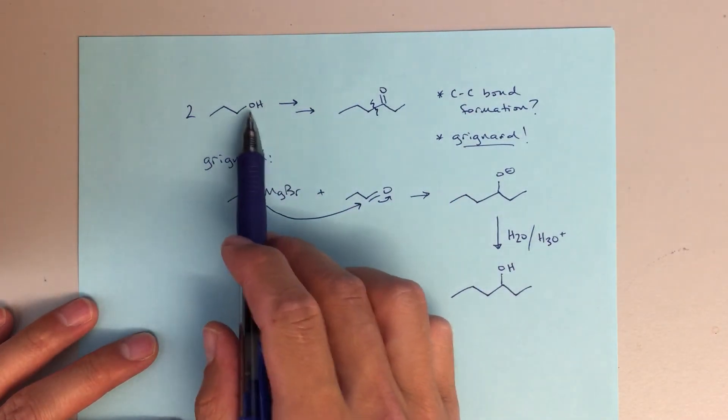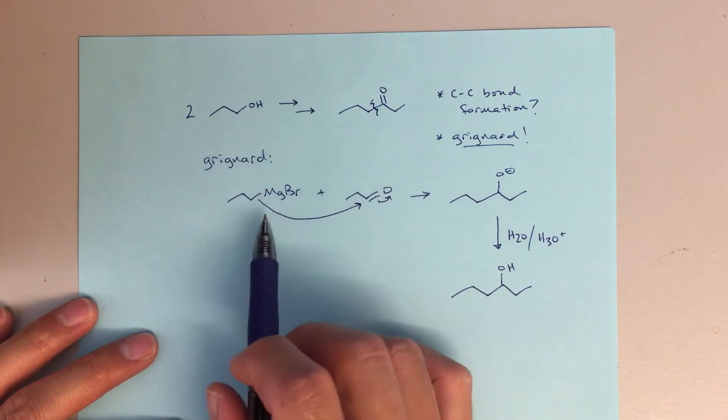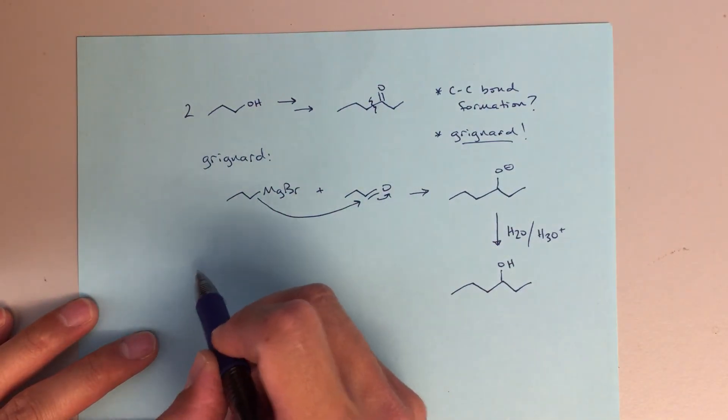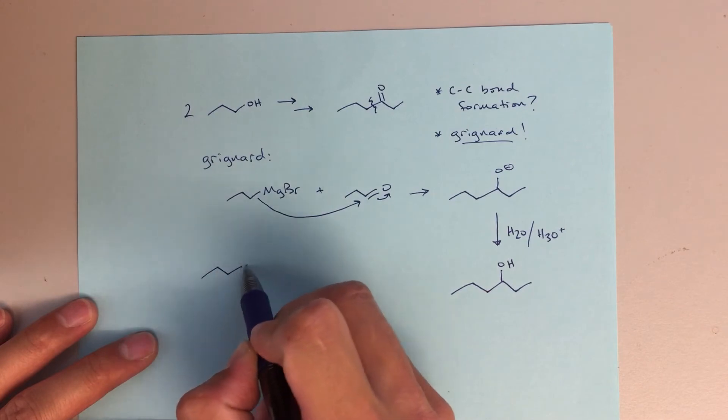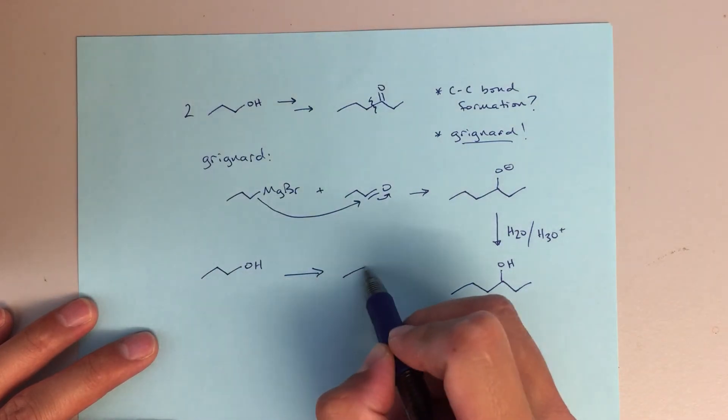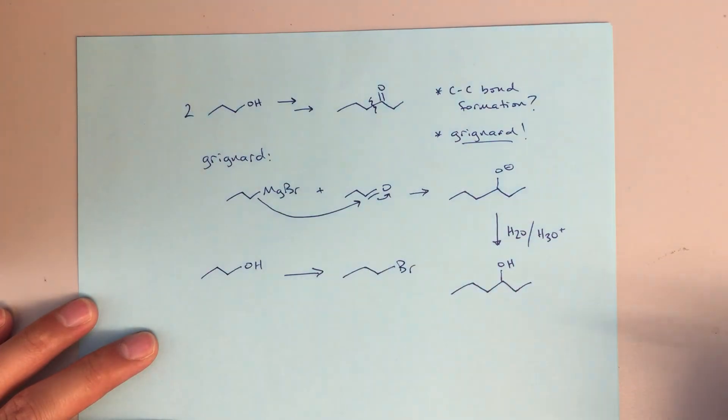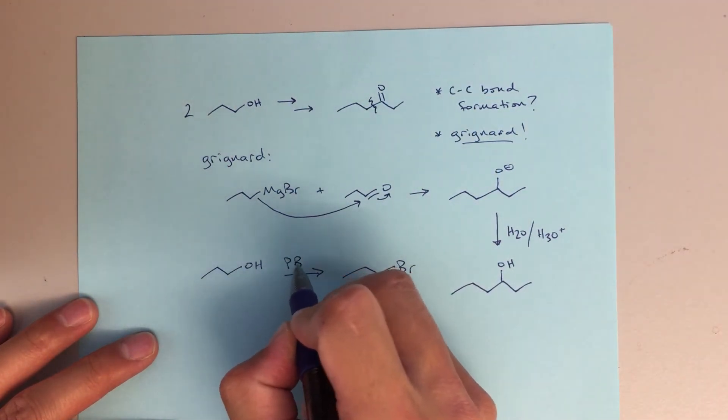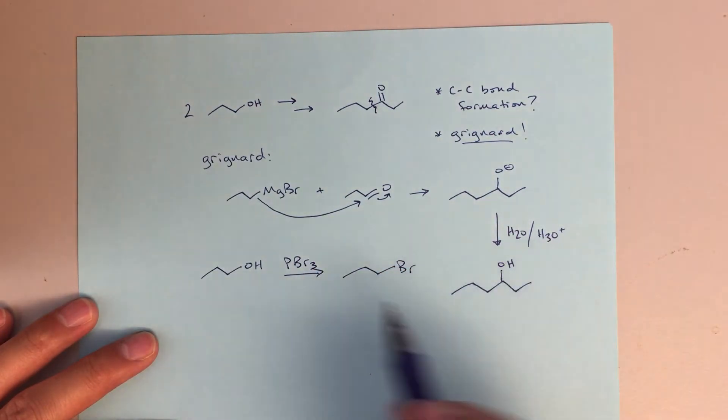Now the question becomes, how can I turn this starting material into my pieces for my Grignard? So let's explore that. And rather than just trying to think of it, I think what really does help is if I write out OH goes to something bromine, so my alkyl halide. So the question, how do I do this reaction? How do I turn an alcohol into an alkyl halide? Well, hopefully you guys remember that PBR3 is a great way to do that. So this will do an SN2 attack, displacing that leaving group to give us this alkyl halide.